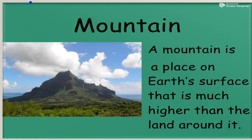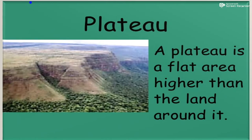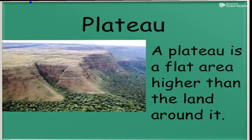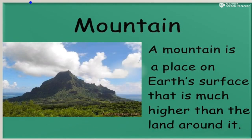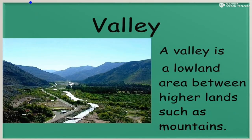Next is mountain. A mountain is a place on the earth's surface that is much higher than the land around it. The difference between plateau and mountain is that a plateau is somewhat higher, but a mountain is much more higher than the surrounding land. Next is valley. A valley is a low land area between higher lands such as mountains — between two mountains, if there is a low area, that is called a valley.